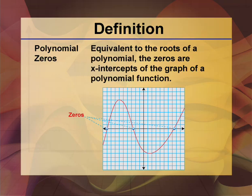Polynomial zeros. Equivalent to the roots of a polynomial, the zeros are x-intercepts of the graph of a polynomial function.